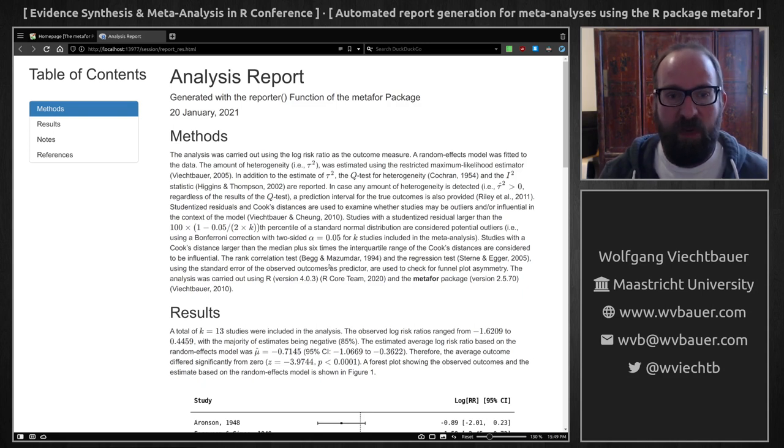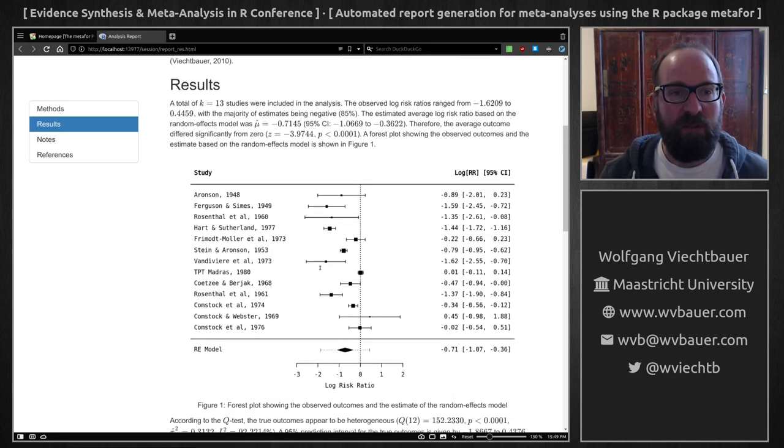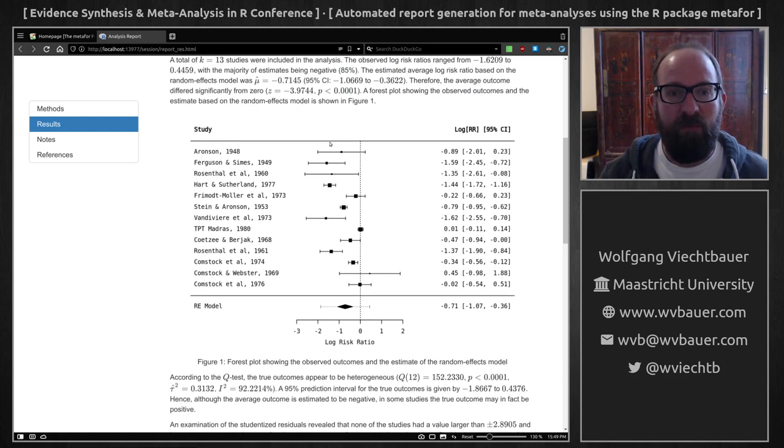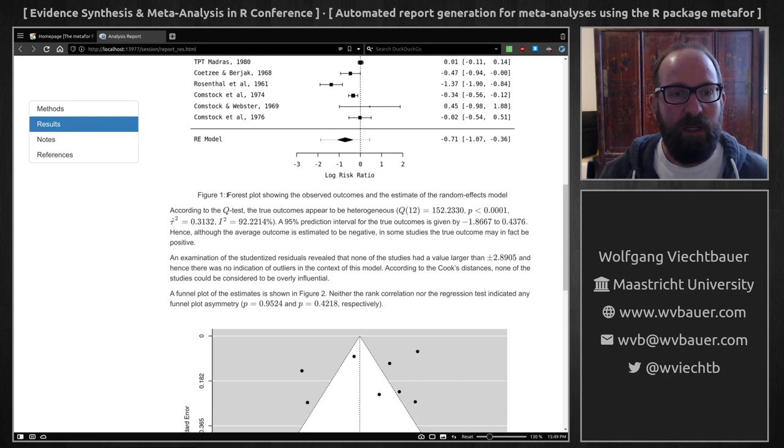It provides information how the data were checked for publication bias and then you get the results. So 13 studies were included in this analysis. We get the range of the observed log risk ratios. We get the estimated average confidence interval. We get the forest plot. We get the Q test, I squared.